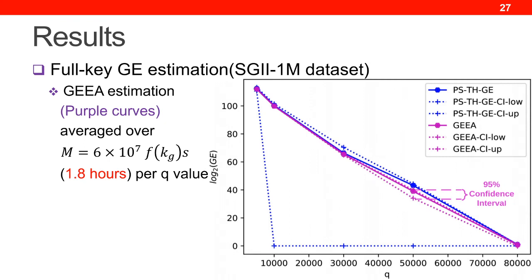In the second experiment, we conduct a traditional template attack to break 16-byte last-round key byte-by-byte based on the one measurement point with the highest correlation with the Hamming-weight label. By sampling 6 times 10 to the 7th scaled probabilities for each Q value in 1.8 hours, GEA is able to provide GE estimation with a very narrow confidence interval, where the empirical method cannot. We can see that at Q equal to 50,000, the GEA confidence interval is now much narrower, and we can judge the safety of the device.